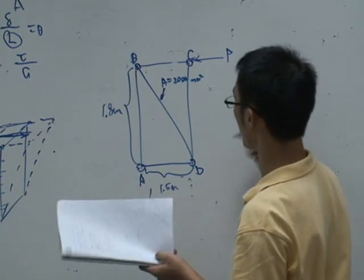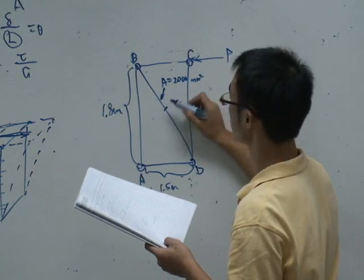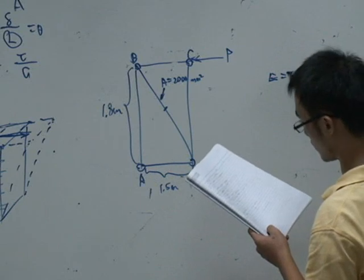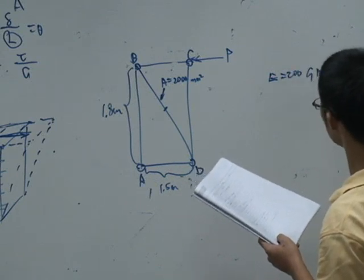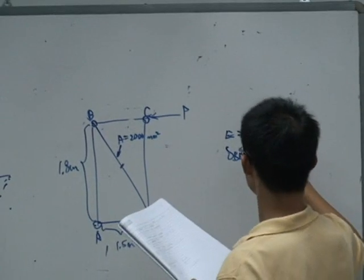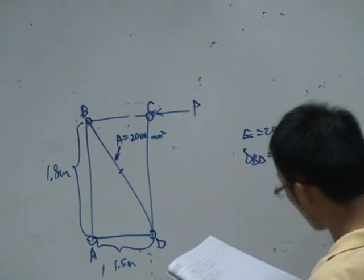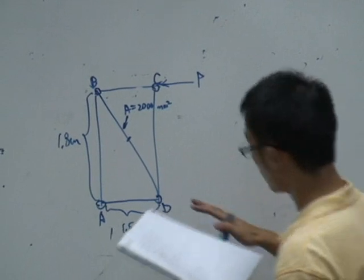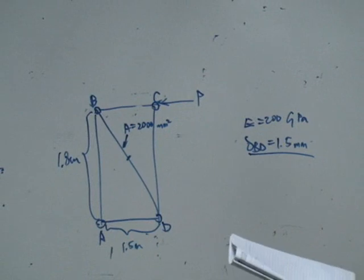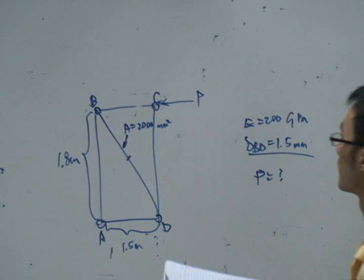So I want to find out what would be the stress induced in this member. The constant, we know, E equals to 200 gigapascal. And the elongation of BD equals to 1.5 mm. Okay. Sorry, the question is to ask what is the P over here, if we know that the elongation of BD is 1.5 mm. So try to find what is the P over here.